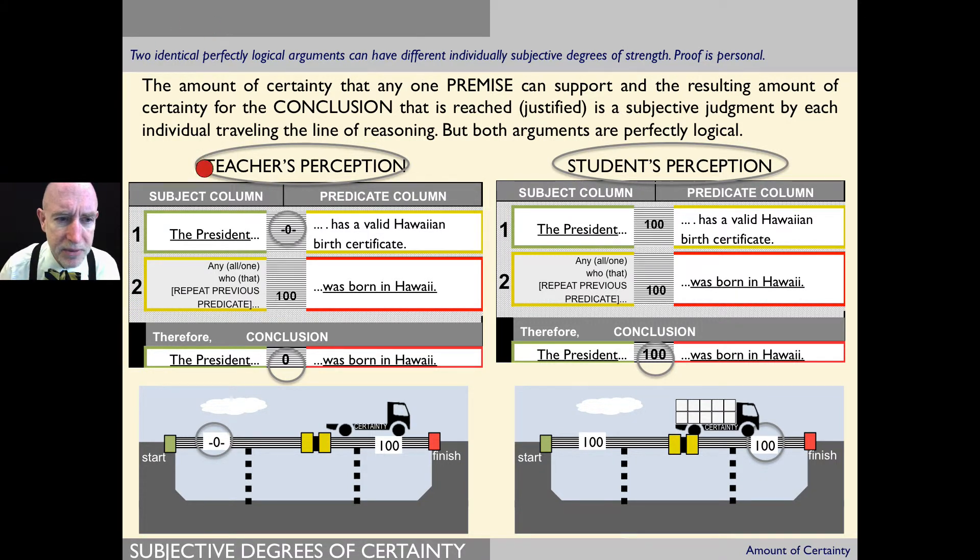So the teacher's perception here for premise number one is zero—zero amount of certainty for the first premise that the president has a valid Hawaiian birth certificate. Now the teacher does believe 100% it's likely true that one who has a Hawaiian birth certificate was born in Hawaii.